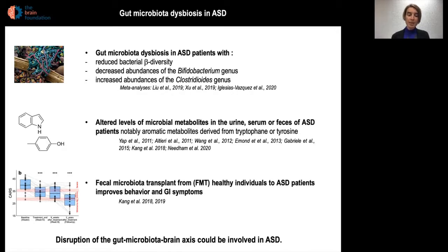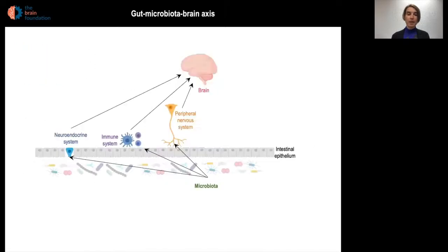A recent study on a small cohort of 18 ASD patients has shown that fecal microbiota transplant from healthy individuals to ASD patients improved behavior but also gastrointestinal symptoms. This body of work has led to the hypothesis that disruption of the gut microbiota-brain axis could actually contribute to ASD.